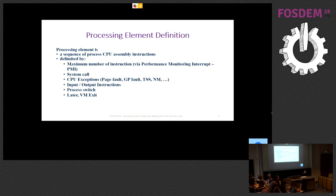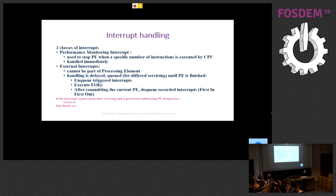Later we will also rely on virtual machine exits to stop the processing element. All these events trigger processing elements so that we can re-execute them, compare the executions, and detect whether there are transient faults. Concerning external interrupts, we distinguish two classes. The first class is the performance monitoring interrupt, used by the hardening module to stop the processing element when a specific number of instructions has been executed by the CPU.